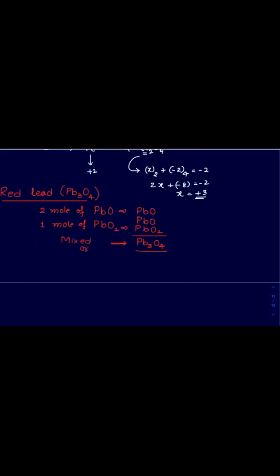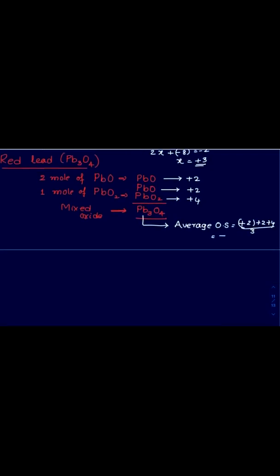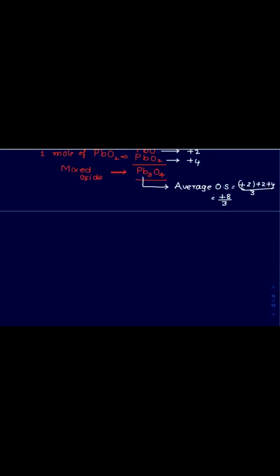Not only Pb3O4, Fe3O4 is also a mixed oxide. In PbO, +2 oxidation state. For PbO2 it has +4 oxidation state. Average oxidation state of Pb3O4 can be calculated by the addition of all oxidation states and dividing by number of Pb atoms. On simplification, the answer will be +8/3. That is the average of different oxidation states.